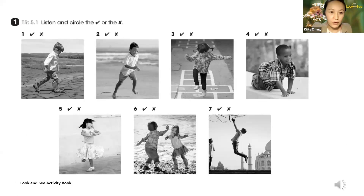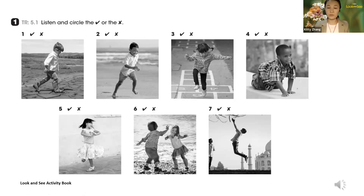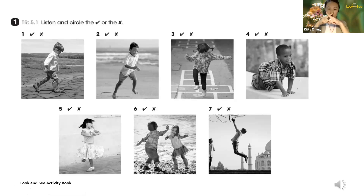Now we'll check if you can do this activity correctly. I'll play the audio and you need to listen carefully and tell me whether the movement word matches the picture. If it's correct, give me a yes — a tick — in the chat. If it's not correct, give me an X — a cross. In a face-to-face classroom, you can ask students to show a tick or cross with their fingers.